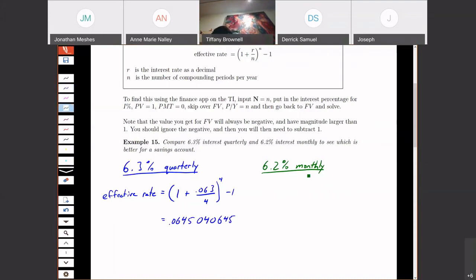Now let's look at the 6.2% monthly. So here my effective rate: I put in the 0.062 because it's 6.2% interest. It's monthly, so the n is 12. So here we get 0.06792517.